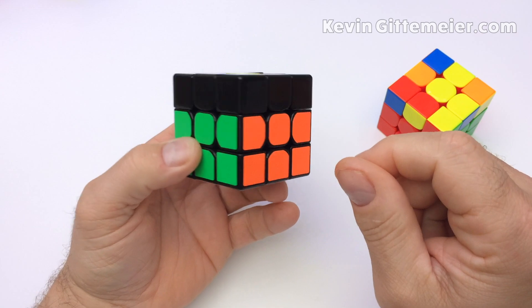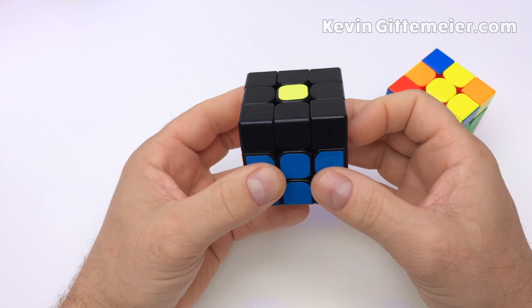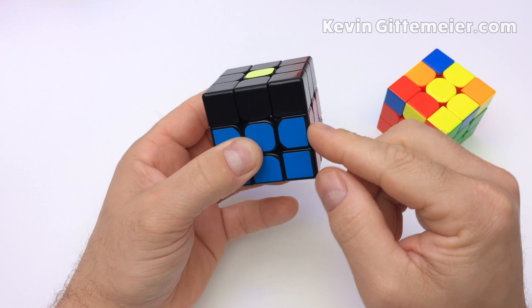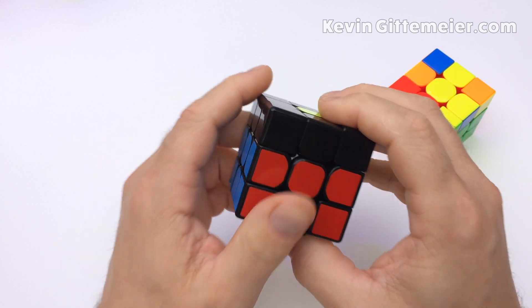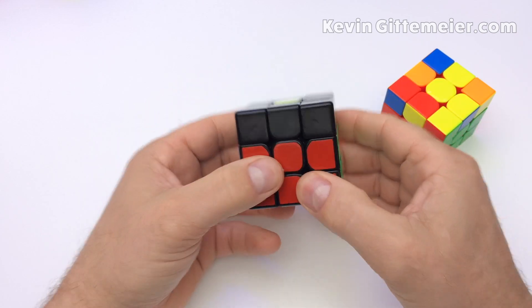Again, it's not important to memorize the turns, but rather understand the principle of connecting corners and edges before reinserting. Try to understand what we are doing in this step. We are catching special rabbits.